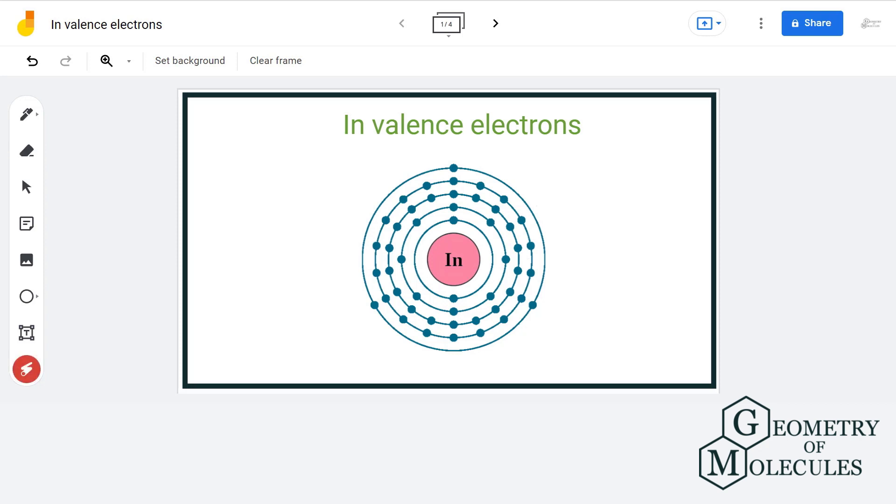Hi guys, welcome back to our channel. In this video we'll look at two ways of determining the valence electrons of indium. Valence electrons are those electrons that are present in the outermost shell of an atom, and they are important because they give an insight into chemical properties of any element. Indium has three valence electrons.